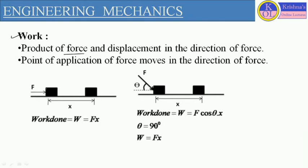Let us consider one object — one block or body which is placed at one place and is in stable condition. Now if we are applying some external force in a certain direction on this object, and after application of force this object moves a distance x, this x represents the shortest distance travelled by the object, representing the displacement. This final position is the final position of the object.